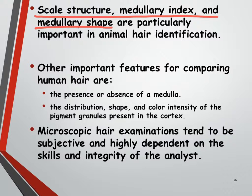Other important features, especially for human hairs, would be either the presence or absence of a medulla. We also consider the distribution, shape, color, and intensity of the pigments visible in the cortex region. The only issue is that looking at these things under the microscope tends to be really subjective, depending on how skilled your analyst is. The more hairs they've studied, the better they are at identifying certain features. When we start doing our hair labs, initially you won't be able to see certain things, but after a while you start learning what to look for.